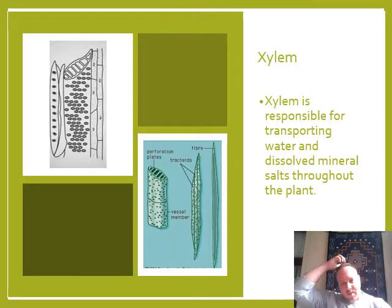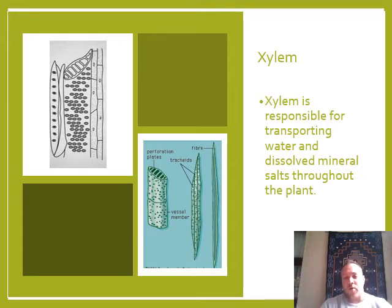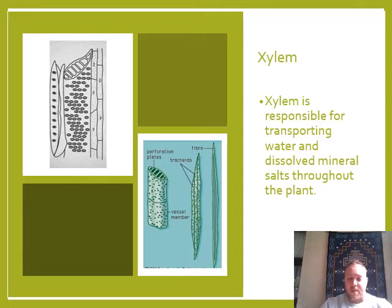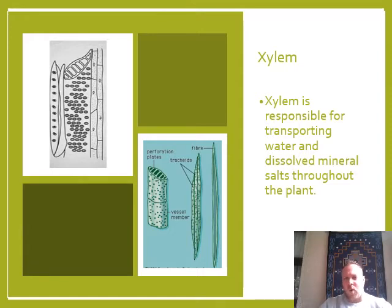Let's have a look at xylem. Xylem is responsible for transporting water and dissolved mineral salts. Remember, phloem carries glucose and amino acids, while xylem carries water and dissolved mineral salts throughout the plant. You'll notice that xylem is often thinner than phloem, and they have grates over the top. Sometimes they're completely open to create these straw-like structures. Draw the one at the top left-hand corner — you can see little holes on the side, and it's open at the top and bottom.